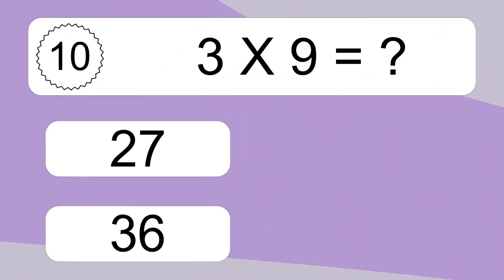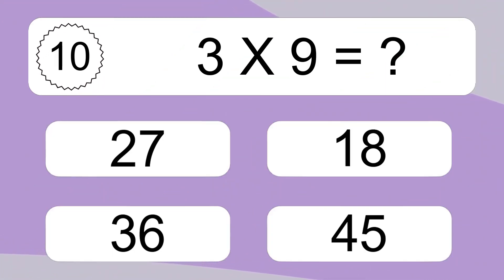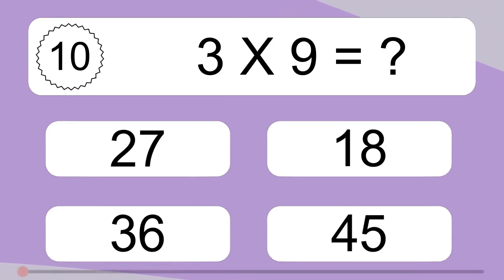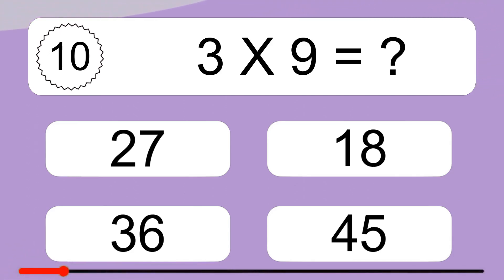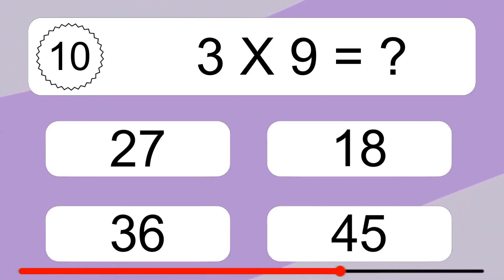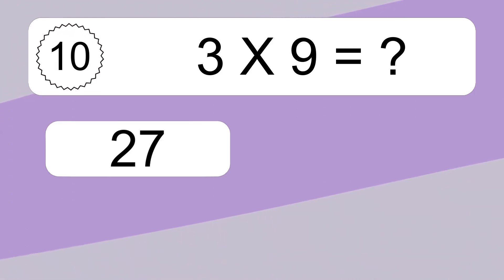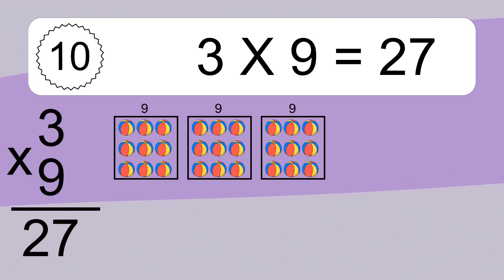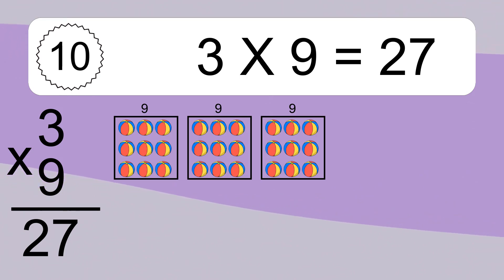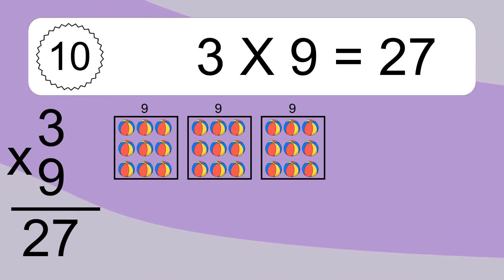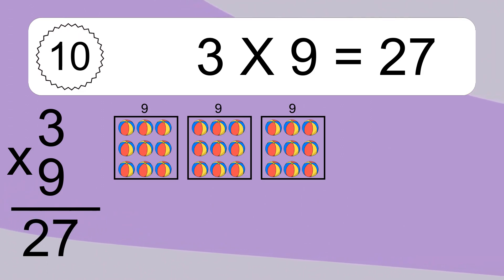3 times 9 equals what? 3 times 9 equals 27. We have 3 boxes and each box has 9 colorful balls inside. If you count all the balls in all the boxes together, you will have 3 times 9 balls. This equals 27 balls.